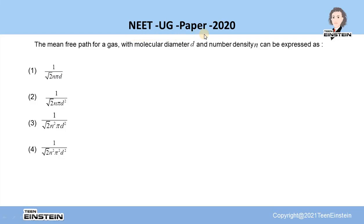Hello students, let us solve a problem from NEET UG Paper 2020. Here is the problem: In this problem you are asked to find out the correct expression for mean free path with molecular diameter d and number density n.